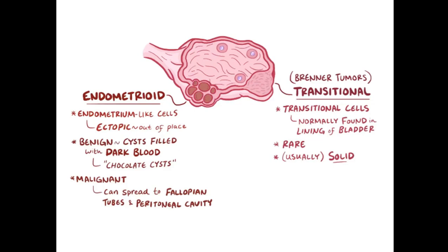Malignant tumors locally invade tissue and can metastasize to other parts of the body. The common site for metastasis of endometrioid tumors is the fallopian tubes and peritoneal cavity. Brenner tumors are transitional tumors containing modified epithelial cells normally found in the urinary bladder. Compared to endometrioid malignant tumors, malignant transitional tumors are rare and mostly do not form cysts but are in compact, solid forms.